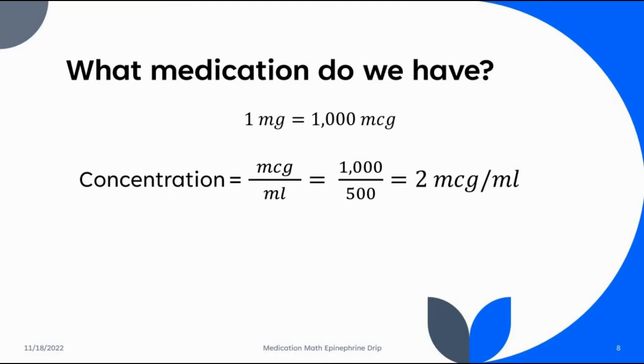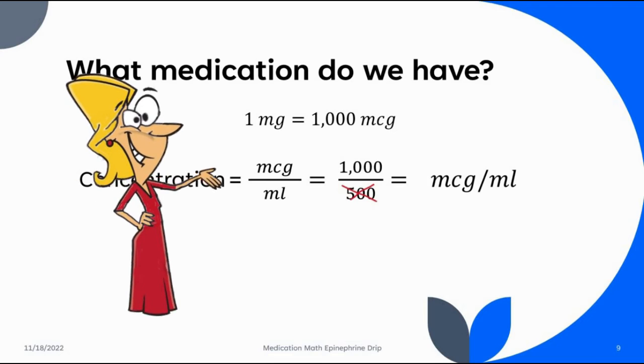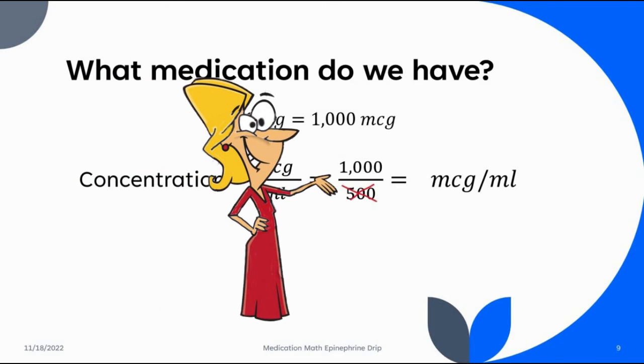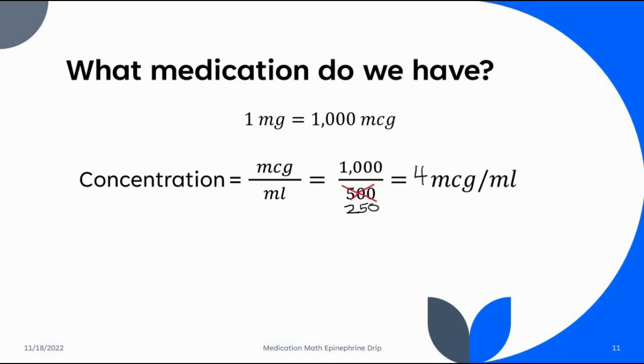So you tell your partner, 'Hey, grab that 500 bag of normal saline and hand it over here.' And your partner tosses it to you, and it's a bad throw. It hits the wall, it goes out the window, it hits the floor and breaks. That 500 bag is gone, and that was the last one you had. So if you don't have that 500 bag anymore and you say to your partner, 'Hey, give me the 250 bag instead,' you just put 250 down there instead of 500 and then do the math again. A thousand divided by 250 should get you four micrograms per milliliter.